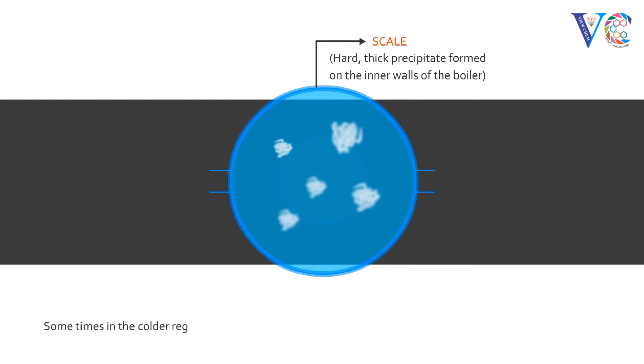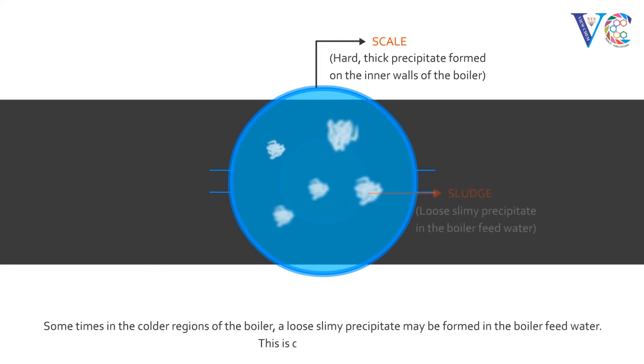Sometimes, in the colder regions of the boiler, a loose slimy precipitate may be formed in the boiler feed water. This is called sludge.